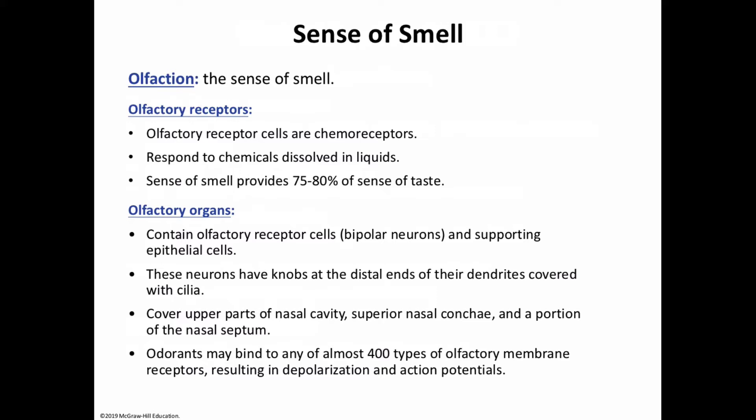The cilia project into the nasal cavity and are the sensitive portions of the receptor cells, allowing us to sense smell. Each of the approximately 12 million olfactory receptor cells has approximately 10 to 20 cilia. Inhaled chemicals that stimulate the olfactory receptor cells are called odorants. There are approximately 400 types of smell genes active only in the nose.